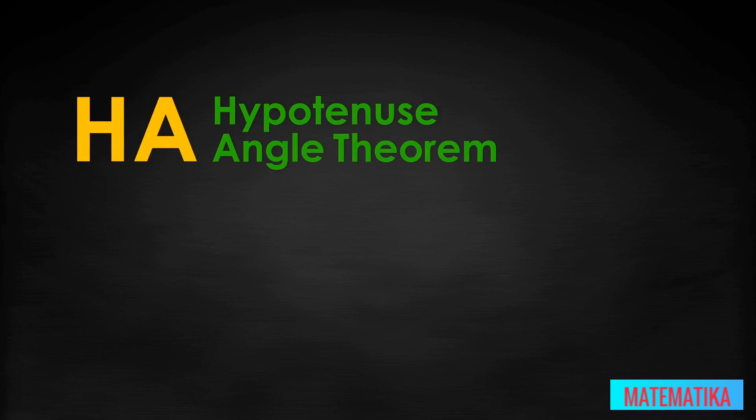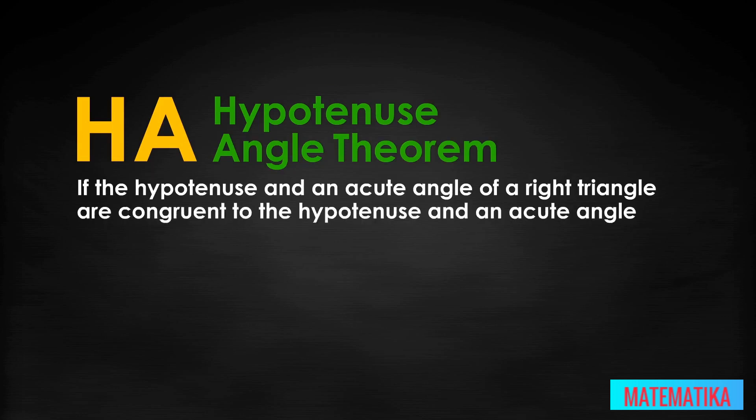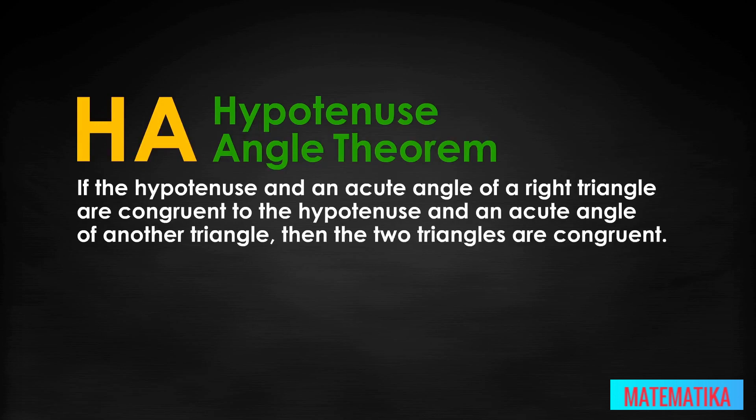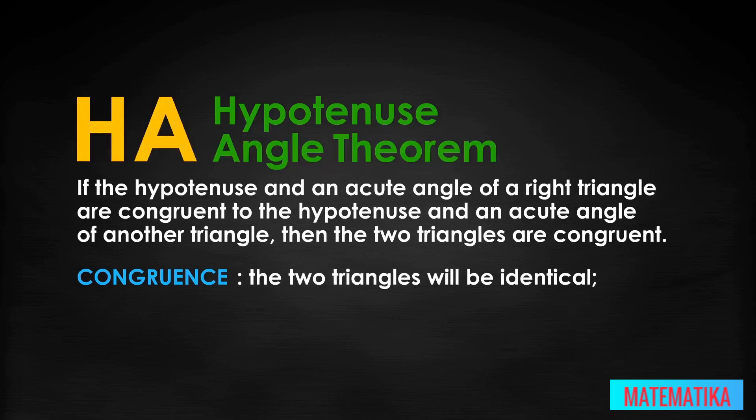Let's look at the HA or Hypotenuse Angle Theorem. The HA Theorem states, if the hypotenuse and an acute angle of a right triangle are congruent to the hypotenuse and an acute angle of another triangle, then the two triangles are congruent. Congruence does not mean just somewhat alike. It means the two triangles will be identical, every side and every angle equal between the triangles.